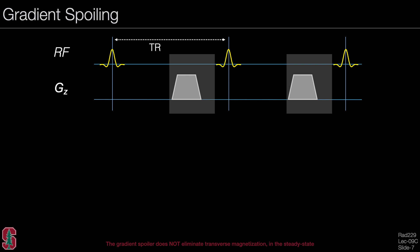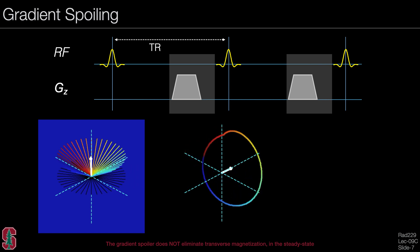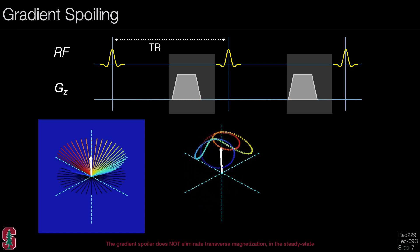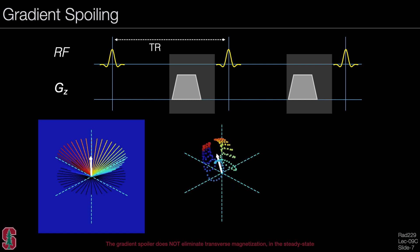In the gradient spoiled sequence, we ignore all of the imaging gradients, leaving the RF pulse and the spoiler gradient. When magnetization is tipped, it is dephased by that spoiler gradient — here we assume one cycle of dephasing across a voxel, though this works for higher numbers of cycles as well. Repeating this sequence, the magnetization reaches a steady state. On each TR, each spin location sees identical precession induced by this gradient, and we slowly see the steady state forming.